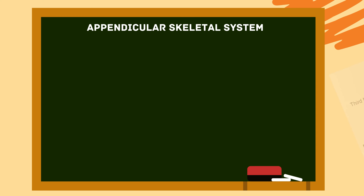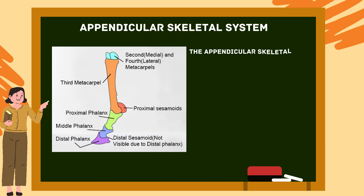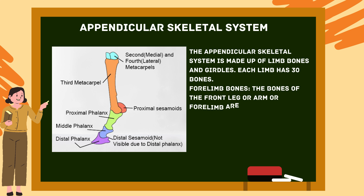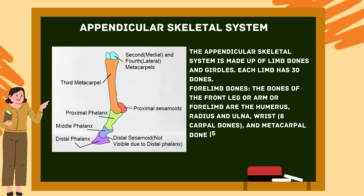The appendicular skeletal system is made up of limb bones and girdles. Each limb has 30 bones. The forelimb bones include the humerus, radius and ulna, eight carpal bones, five metacarpal bones, and 14 phalanges.